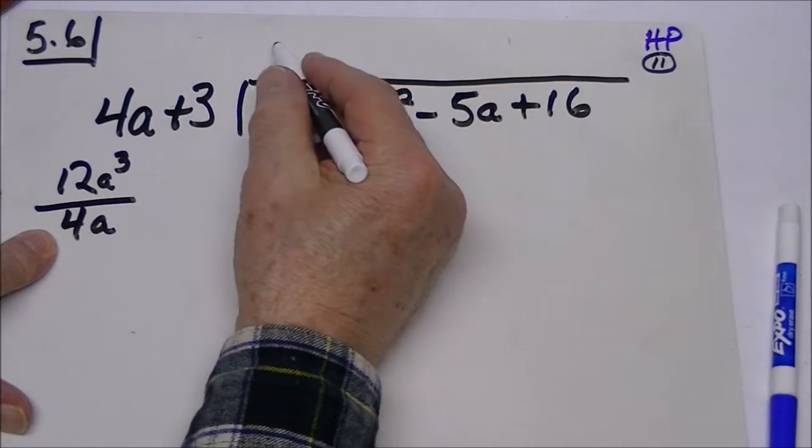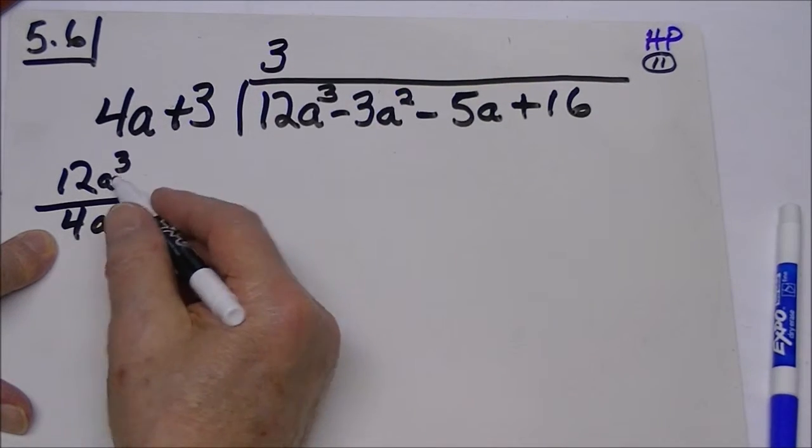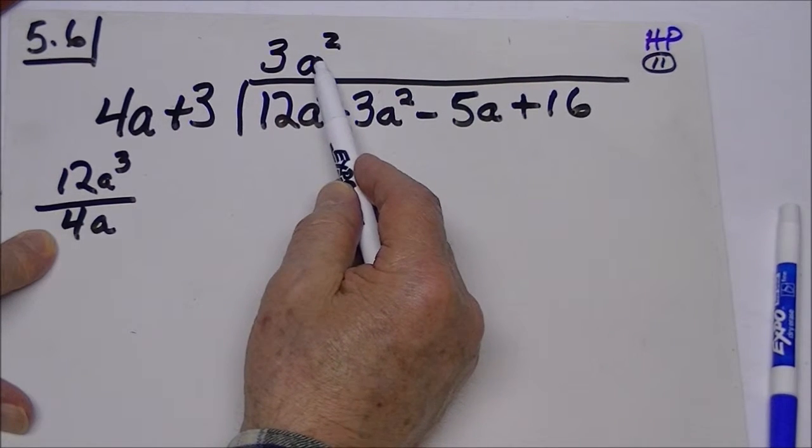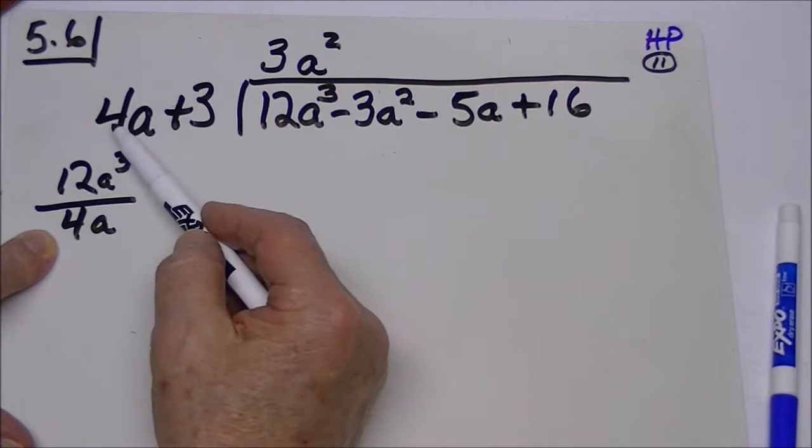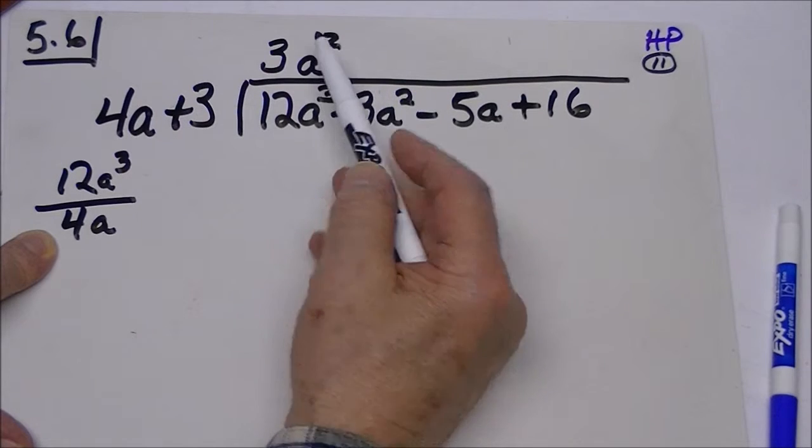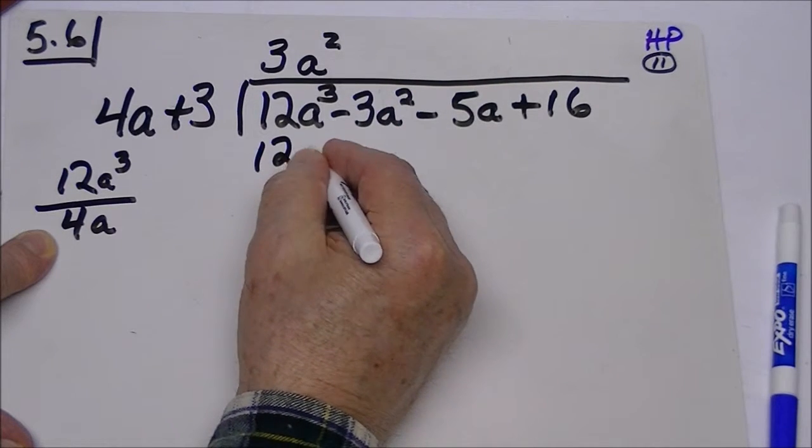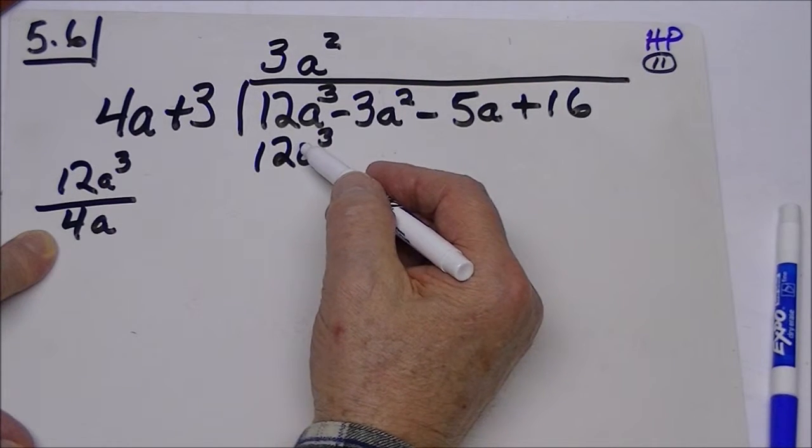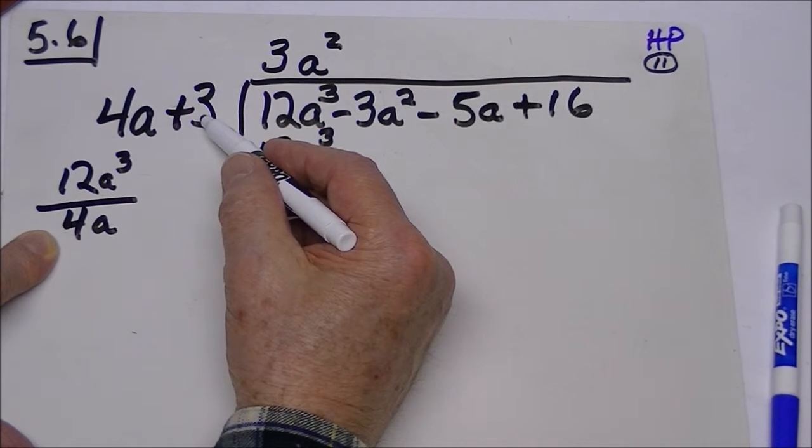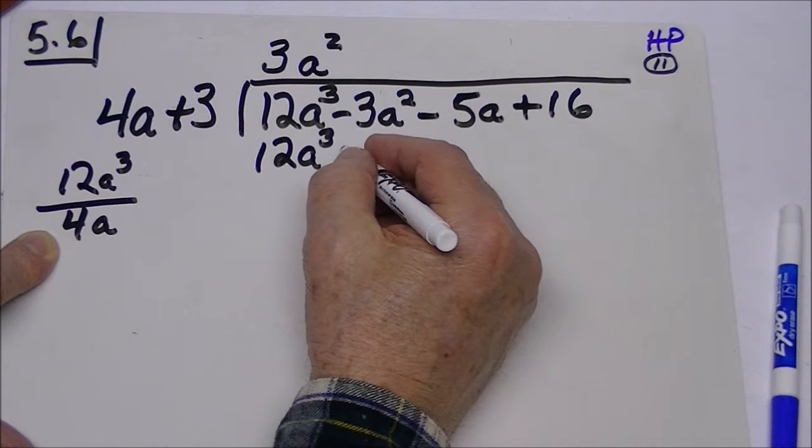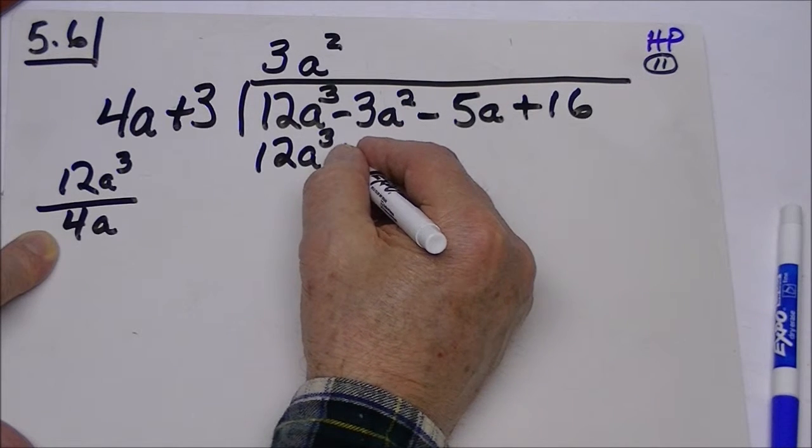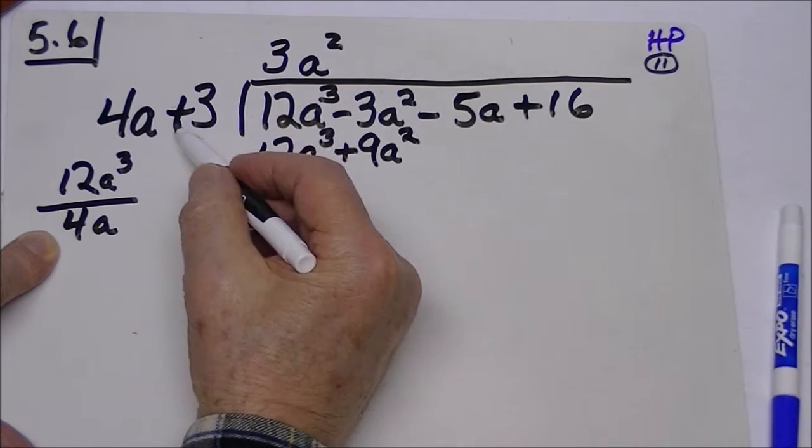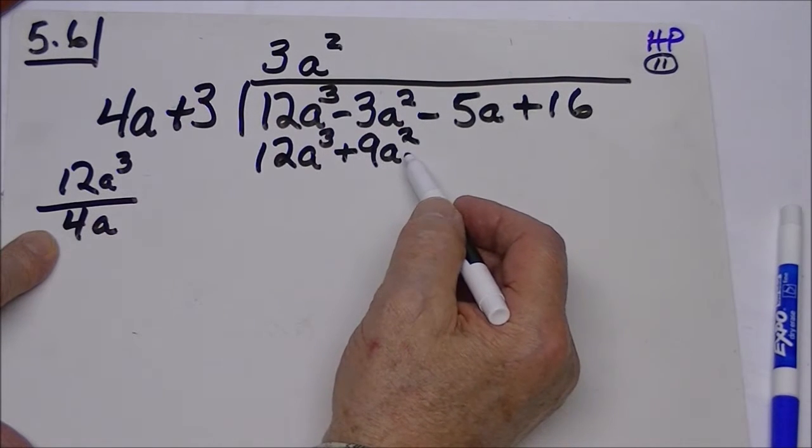Now four will go into twelve three times, and a will go into there a to the second, so you now have your first term there. Now the rule is you multiply this first term here by this, and you're going to get twelve a to the third, and that's what you want to do. Now you're going to take this three and multiply it by this, and you now get a positive nine a to the second, three times this, a positive nine a to the second.